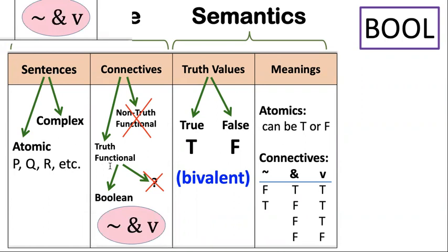Remember we said that formal systems have three parts: a language, a semantics, and a proof theory? Well, here's part number two, the semantics. The semantics has two components: it has truth values and then it has specific meanings of the symbols in the language. The truth values in Boole are just the true and the false. There are two truth values, so that's why it's called bivalent — bi for two and valent for the values. What that means is every sentence of Boole has to be either true or false.